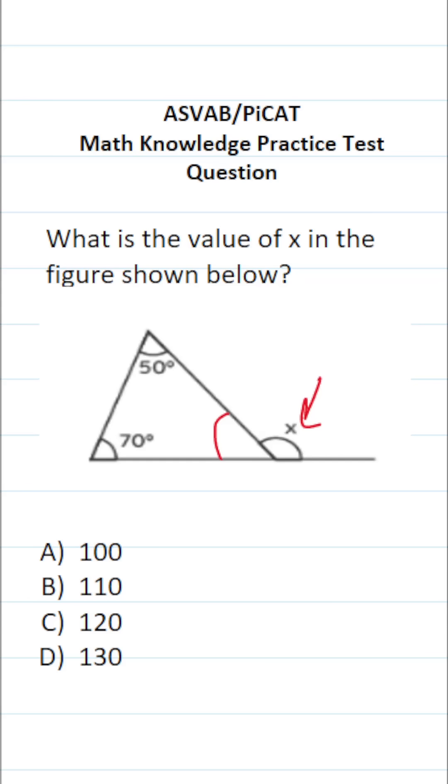And algebraically, that looks like this. Measure of angle A plus the measure of angle B plus the measure of angle C will equal 180 degrees. What's more, I can say angle A equals 70, angle B equals 50, and angle C is this unknown measure in this triangle.